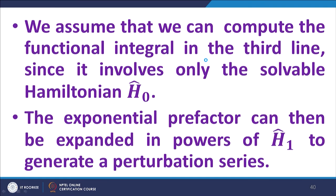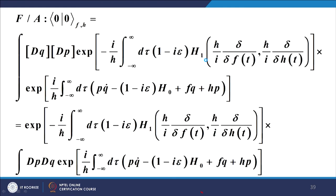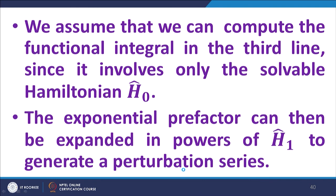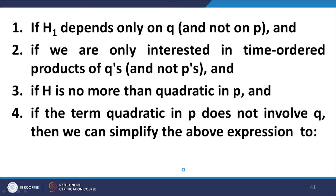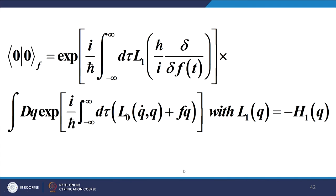Now things become very simple. The remaining path integral expression contains only H₀, which by assumption is exactly solvable, and therefore the path integral for H₀ should be solvable. The exponential pre-factor involving H₁ would have to be treated as a power series or perturbation series and then solved. In some special cases, we can simplify and arrive at a closed expression for the vacuum-to-vacuum transition amplitude. Thank you. We will continue after the break.